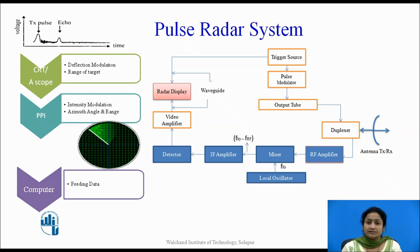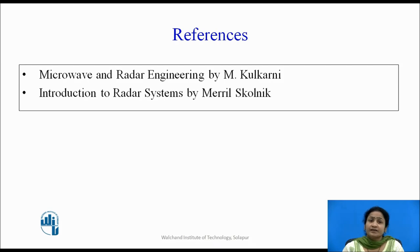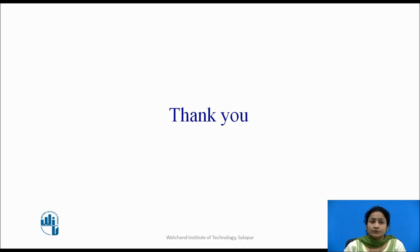In a pulse radar system, the signals transmitted in pulses are received and the received pulses are calculated, then fed to the radar display system. These are the references from which the information for this presentation was collected. Thank you.